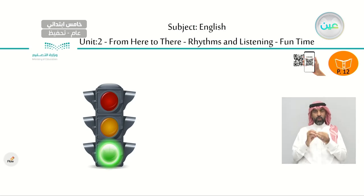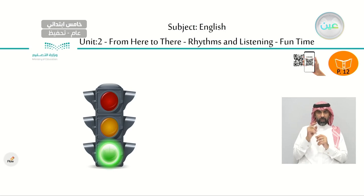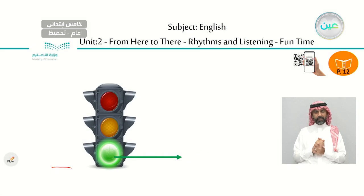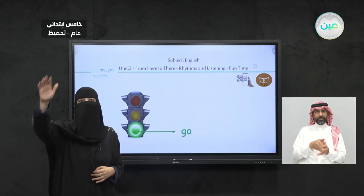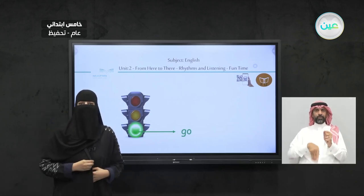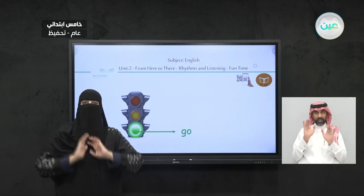Now it is green. It is green. What does it mean when it is green for cars? It means go. Yes, it means go. So when it is green, it means go.